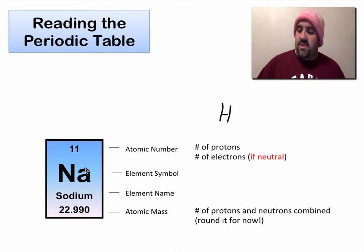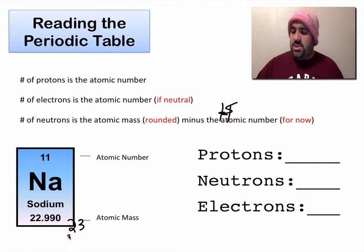And again, the atomic number is the number of protons in any element or atom. It is also the number of electrons if neutral, and we are going to start with mainly neutral atoms for now. It's the number of protons and the number of electrons. And this atomic mass is the number of protons and neutrons combined. And we're going to round this number for now. We would make this number 23.